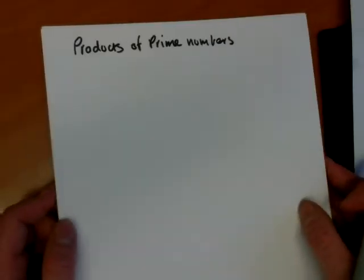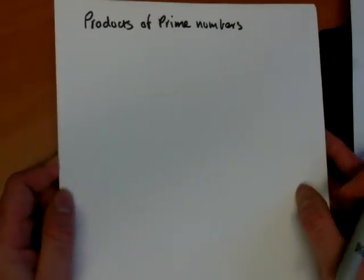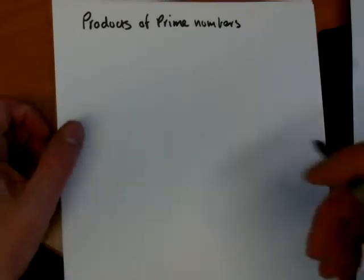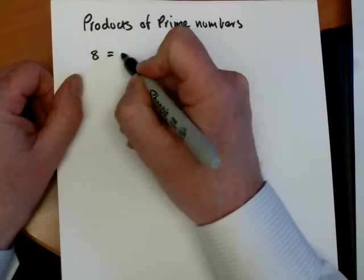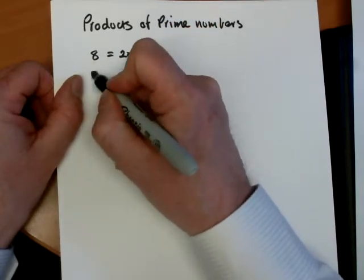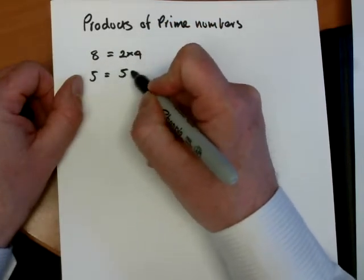So we're going to look at products of prime numbers. I'll get this paper nice and straight for you. Okay, so any number can be expressed as a product. 8 can be expressed as 2 times 4. 5 can be expressed as 5 times 1.